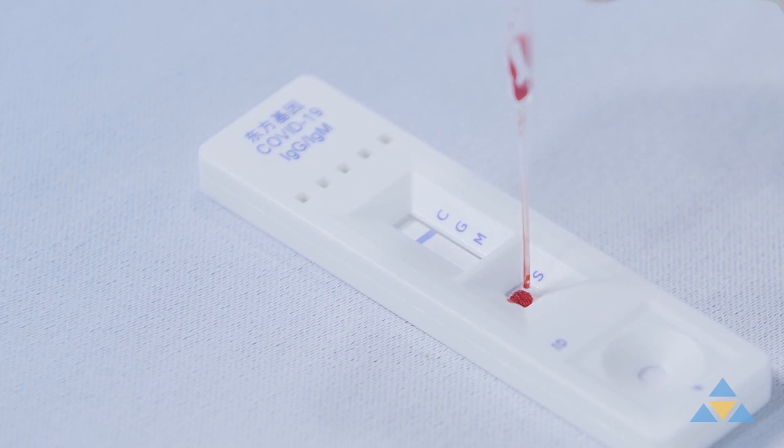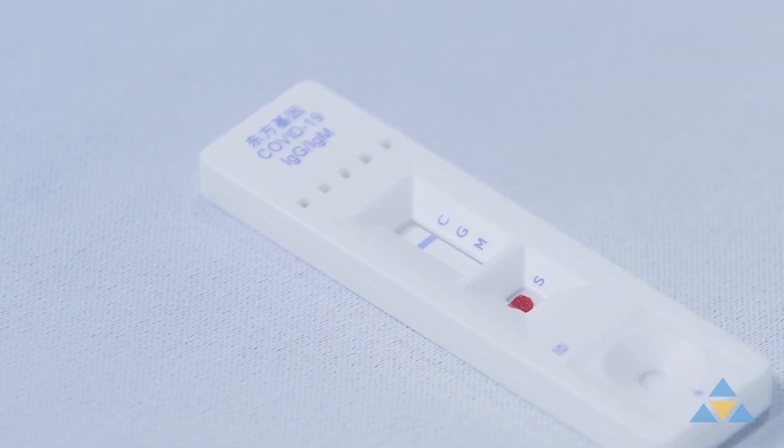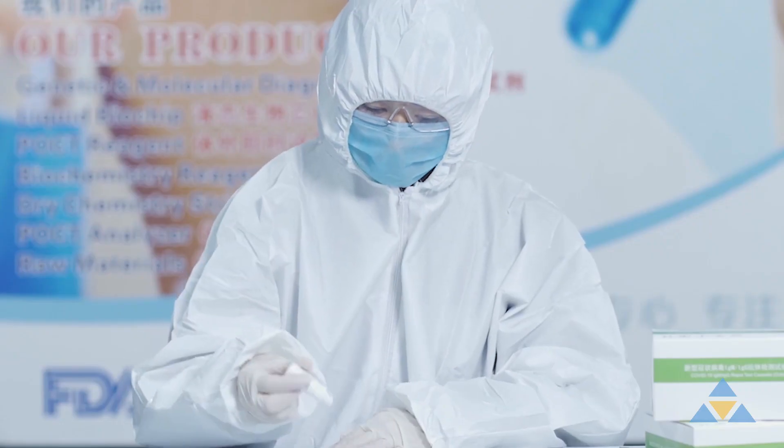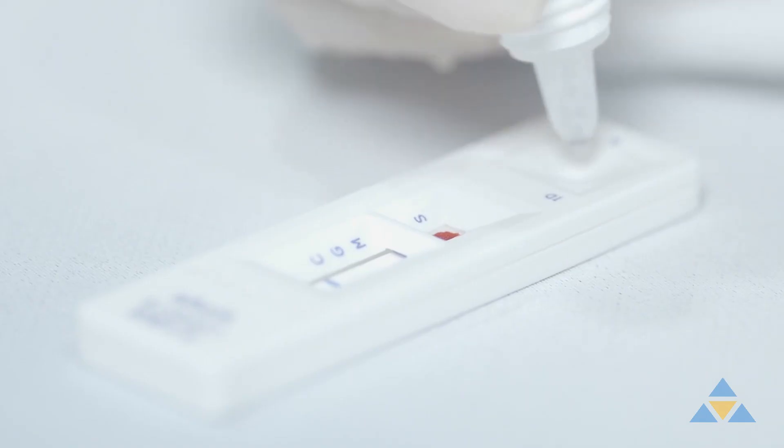Add one drop to the specimen well labeled S on your testing cassette. Then immediately add two drops from the buffer to the buffer well labeled B on your testing cassette.